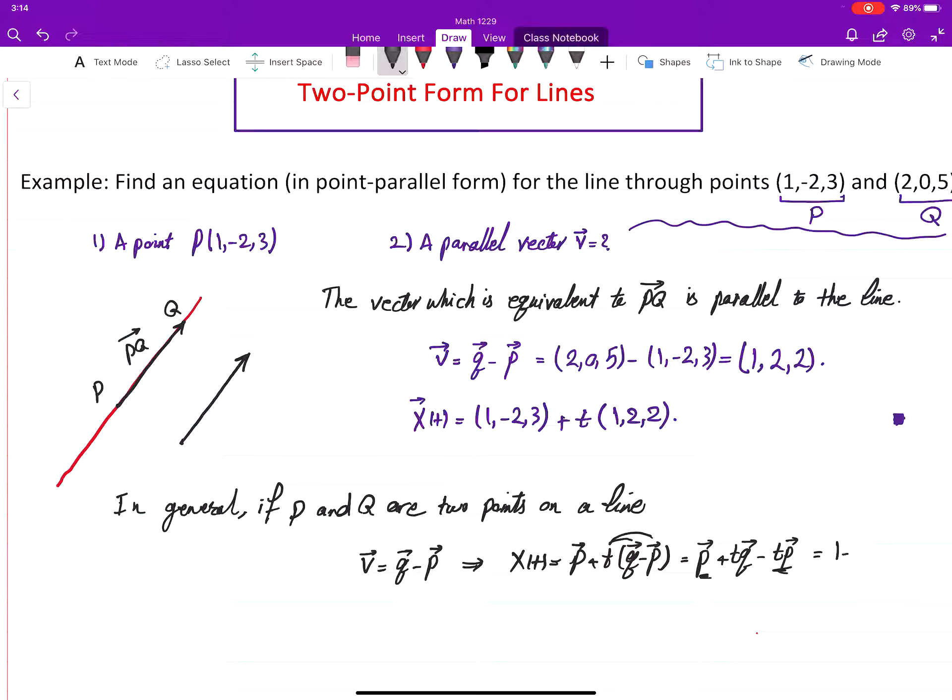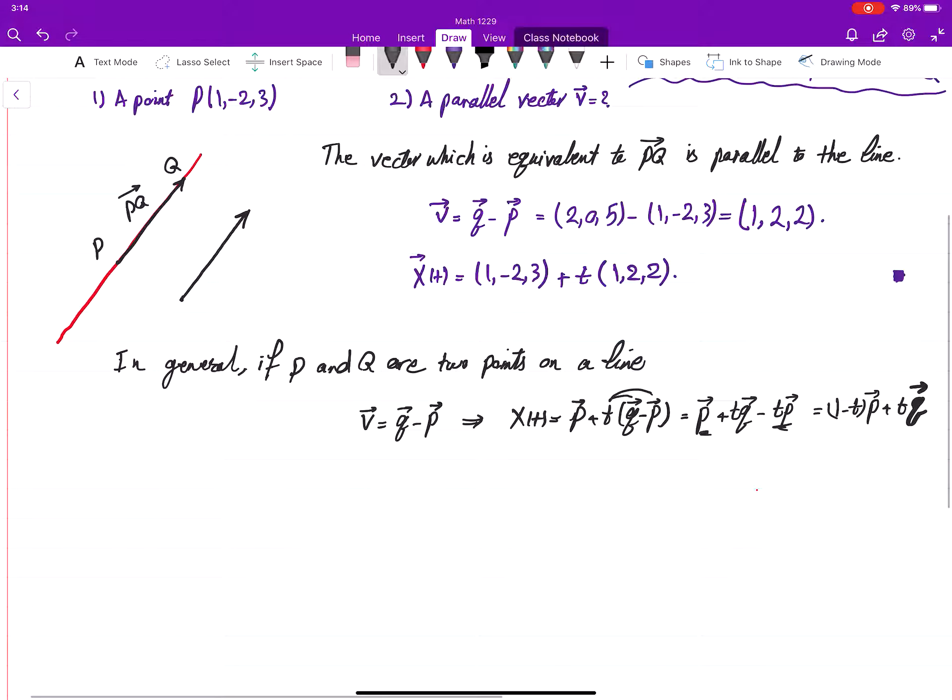So it will be 1 minus t times P, plus P, plus t times Q. And this is what we are looking for. This is a new form of equation: X(t) equals (1 - t) times P plus t times Q.